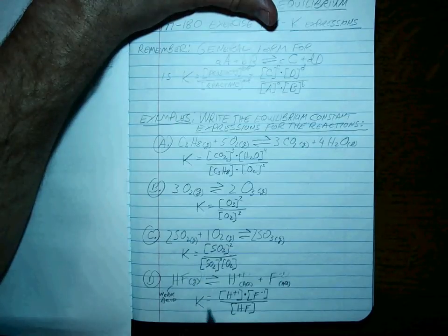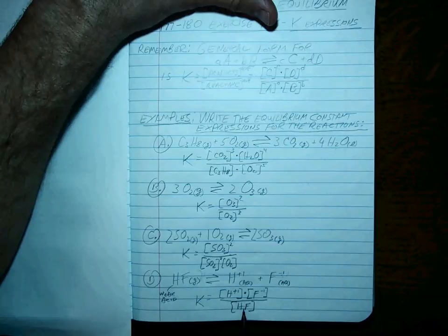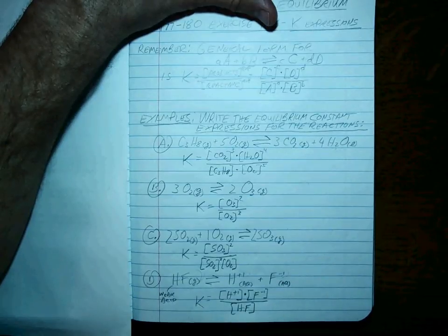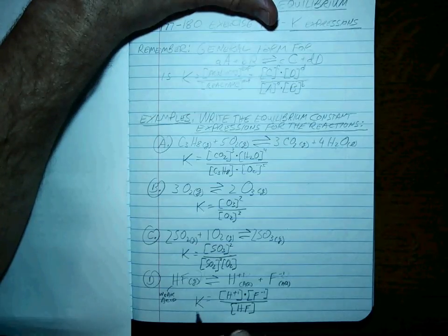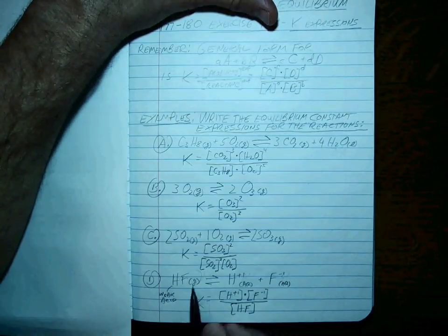means reactants predominate. If it's a big K value, these numbers would be big, that number would be small, concentrations which would make K really big. So the value of K tells you a little bit about the reaction.